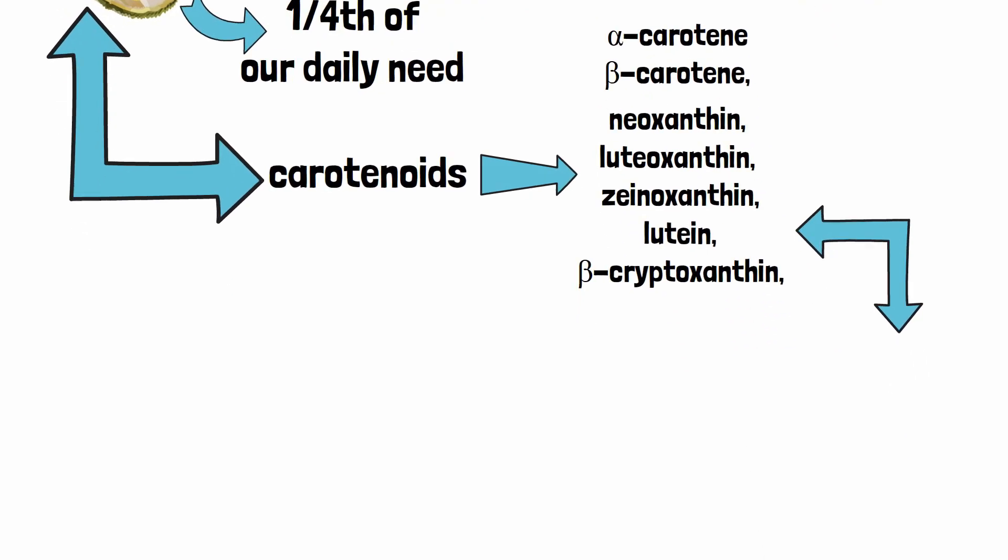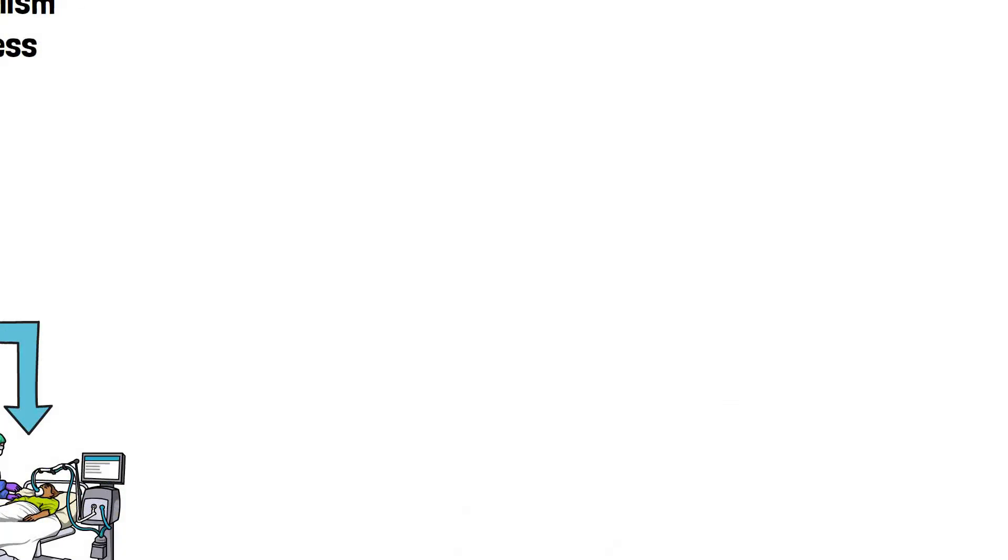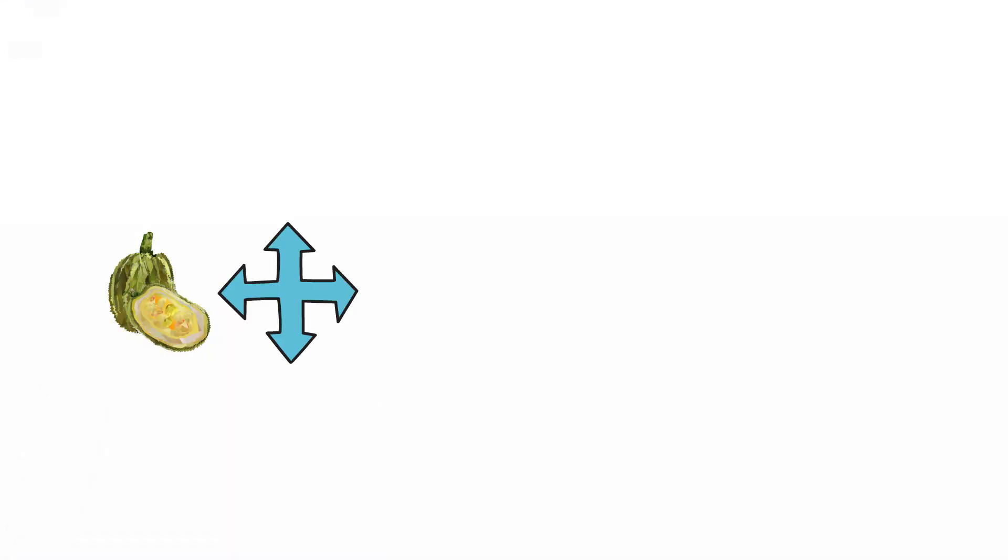These carotenoids are effective against diseases like cancer and cardiovascular diseases. If you look at jackfruit's nutrition profile you would also find some phenolic contents, which are believed to prevent heart diseases.